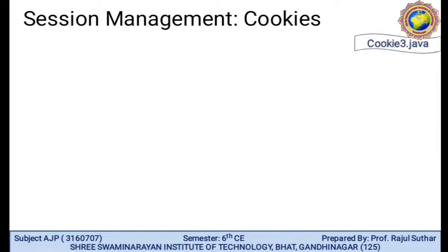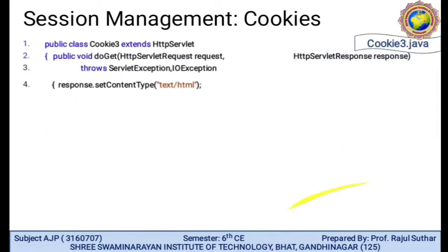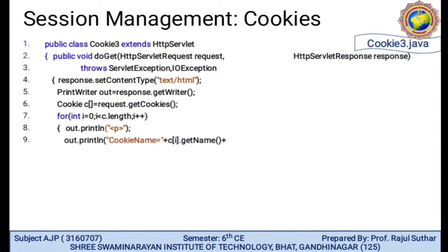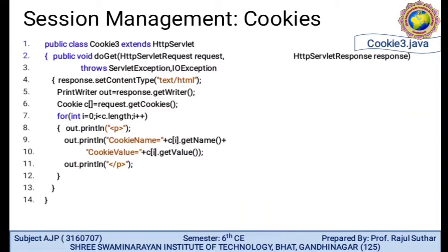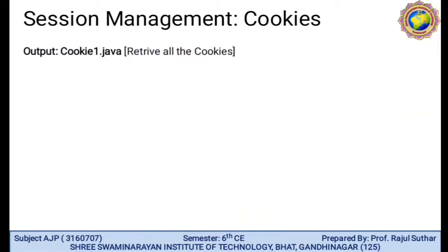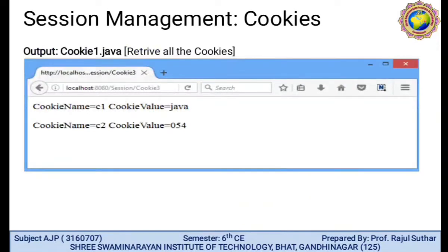After clicking the next page, we go to cookie3.java. In the cookie3.java class, we require a for loop — int i = 0; i less than c.length; i++ — and out.print the cookie name using c[i].getName() and its value. The output in the third page shows cookie name c1 with value java and cookie name c2 with its value.